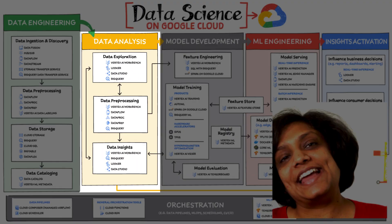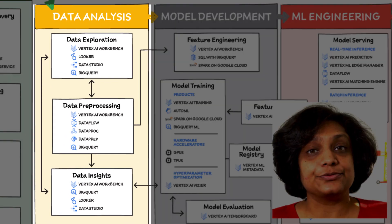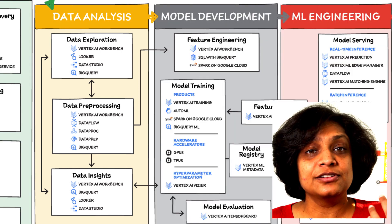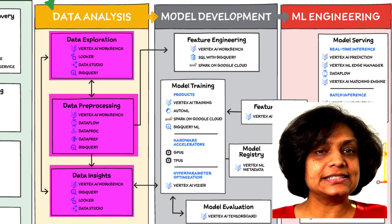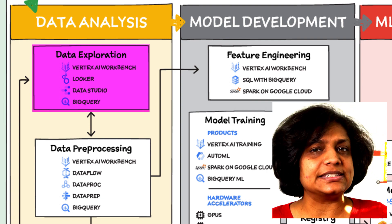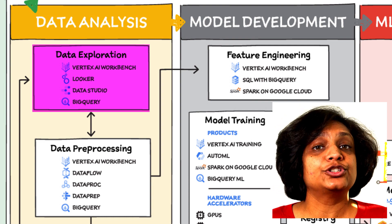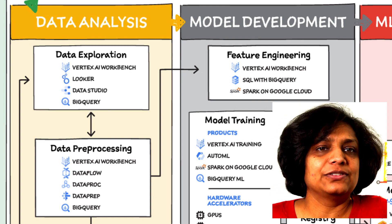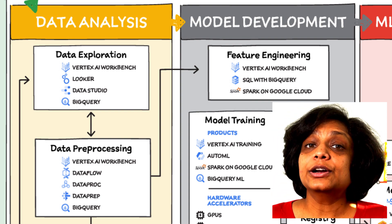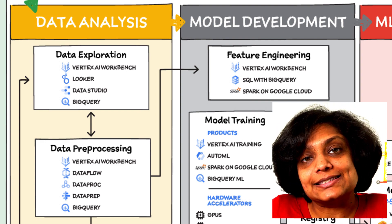Now comes data analysis. From descriptive statistics to visualizations, data analysis is where the value of data starts to appear. Data exploration, data pre-processing, and data insights are parts of this. Data exploration is a highly iterative process — it involves slicing and dicing the data via pre-processing before data insights can start to manifest through visualizations or simply via group-by and order-by operations.